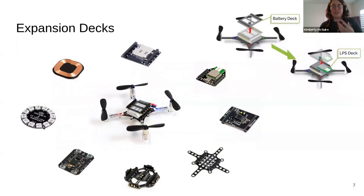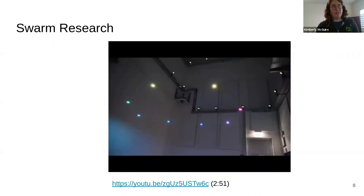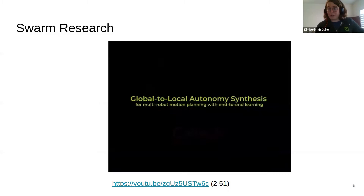These expansion decks can give the drone extra sensors and extra functionality — sensing the environment, adding colorful LEDs, wireless charging, positioning, and more. They're interchangeable; you can pop one off and pop another on and it becomes a different drone. That's the modular design of the CrazyFlie. Because the CrazyFlie is so versatile, a lot of researchers use it for swarm robotics research and other types of research as well. All the software and firmware is open source, and many researchers contribute back to our firmware.